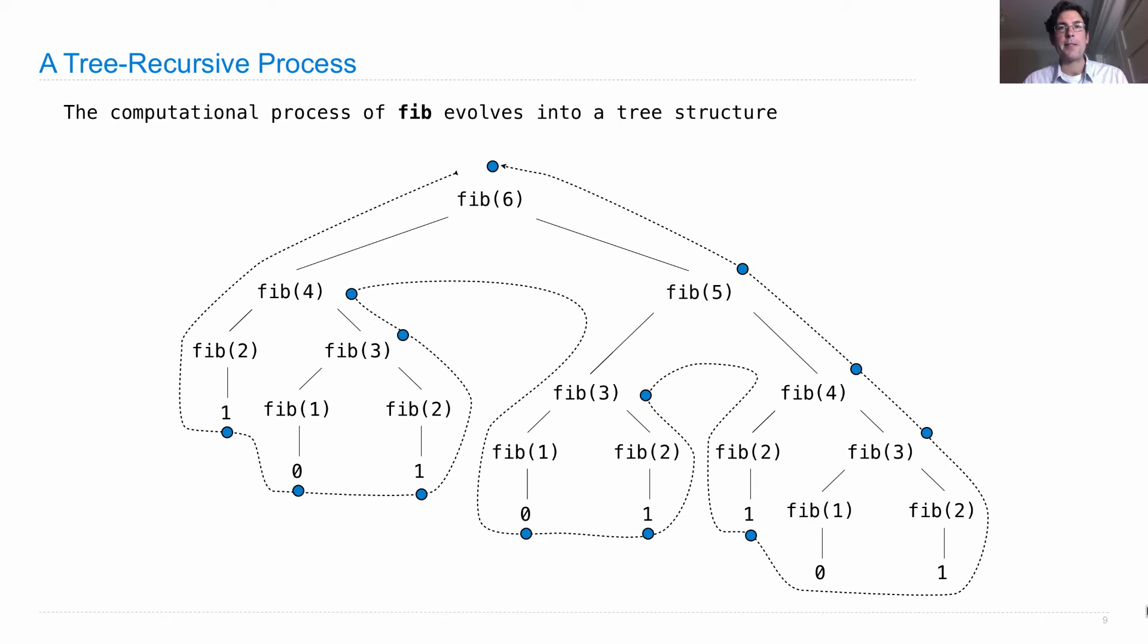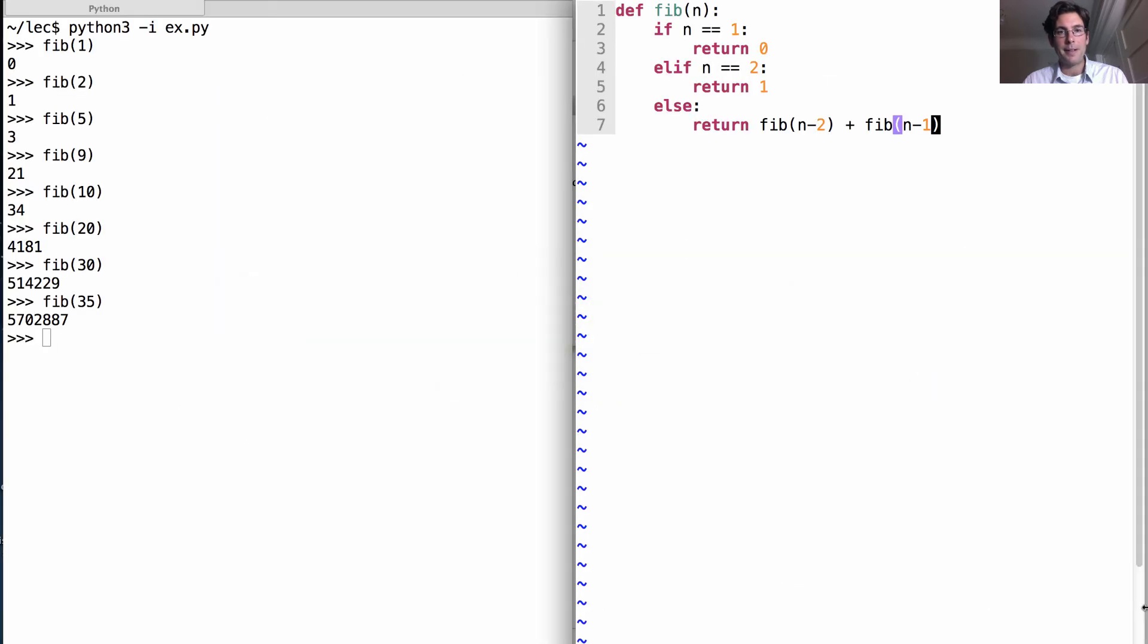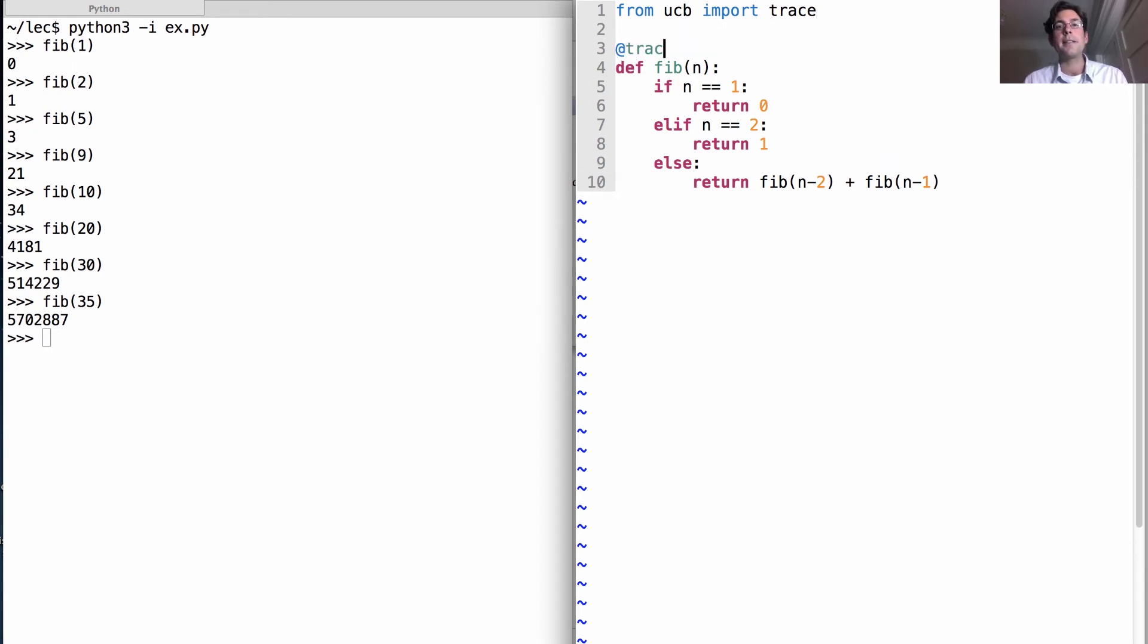Now how do we visualize that in order to verify that's the case? Well, as part of your project, I gave you a function called trace. It's part of the UCB module. And we haven't used it up until this point, but we'll use it now. What it does is it'll print out whenever a function is called and whenever we return from that function.